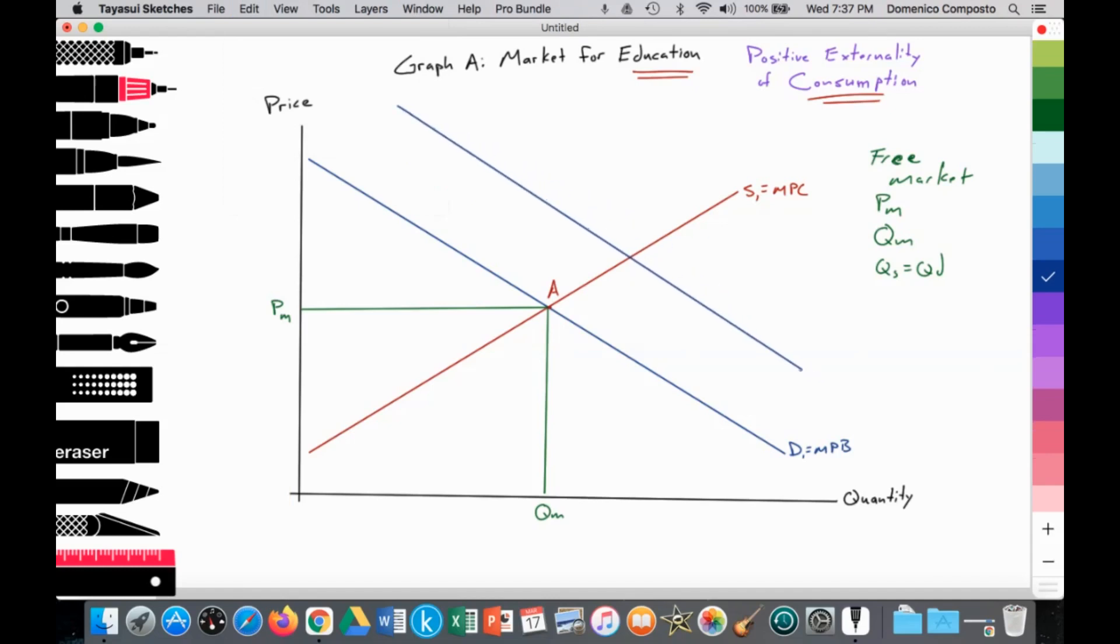We have our additional demand curve here at D2, which is equal to the marginal social benefit. Society would like this level of consumption of education. We're going to assume that on the production side, there is no externality. We'll assume that the marginal private cost is equal to the marginal social cost. We just lack enough demand for education.